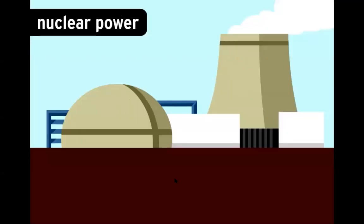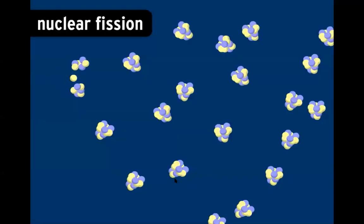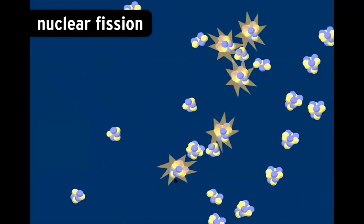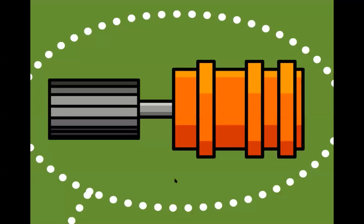Nuclear reactors take advantage of the unstable atoms in substances like uranium and plutonium. A process called nuclear fission splits the nuclei of these atoms, creating a controlled chain reaction and generating a lot of heat. You guessed it. The heat turns water into steam, which turns the turbines of generators.